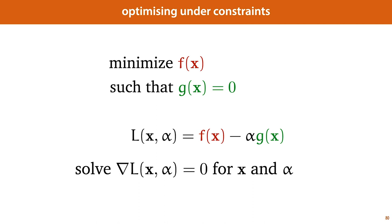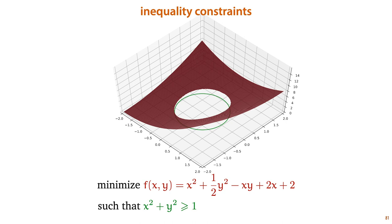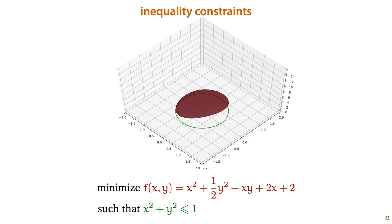This method works for equality constraints, but in many other problems — like the one we saw in the previous video — we have an inequality constraint. For example, instead of saying our solution must lie on the green circle, we might state that our solution can lie anywhere outside the green circle. Inequality constraints can be active or inactive. A constraint is inactive if removing it doesn't change the minimum we would find. If we change the direction of the inequality to allow only solutions inside the circle, we get an active constraint — the constraint stops us from going where we want to go and we end up on the boundary, just as we did with an equality constraint.